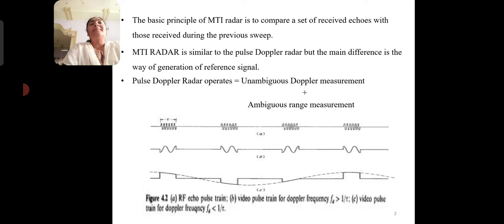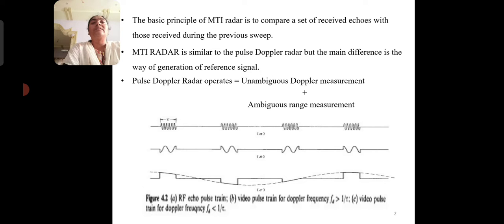The basic principle of MTI radar is to compare a set of received echoes with those received during the previous sweep. MTI radar is similar to the pulse Doppler radar, but the main difference is the way of generating the reference signal. Pulse Doppler radar operates with ambiguous Doppler measurement and ambiguous range measurement.